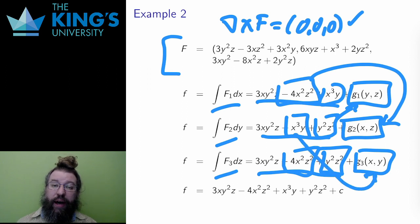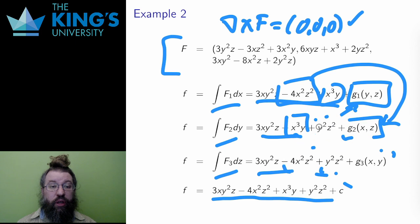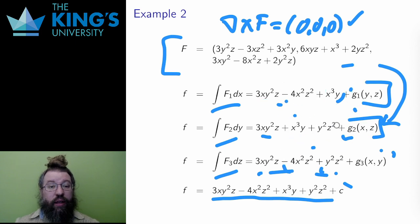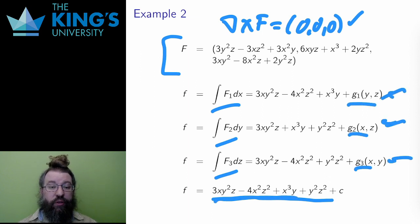In this way, I can make all three of these the same function by choosing g1, g2, and g3 carefully. The result is a potential of 3xy squared z minus 4x squared z squared plus x cubed y plus y squared z squared plus c. This matches all three equations for some choice of g1, g2, and g3. This is the potential, and again, it still does have some constant plus c.